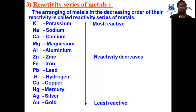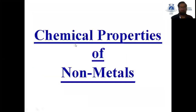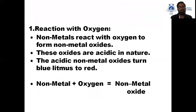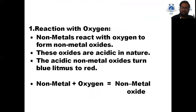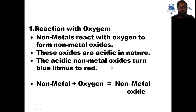Now we will study some chemical properties of non-metals. The first property is reaction with oxygen. Non-metals react with oxygen to form non-metal oxides. These oxides are acidic in nature because they turn blue litmus paper red. When a non-metal reacts with oxygen, it forms a non-metal oxide.